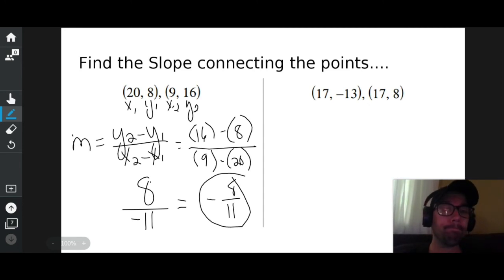One more. X sub 1, y sub 1. Step 1, label your points. X sub 1, y sub 1, x sub 2. Hmm, interesting. Y sub 2. The next step is to write out your formula. M equals y sub 2 minus y sub 1 over x sub 2 minus x sub 1.